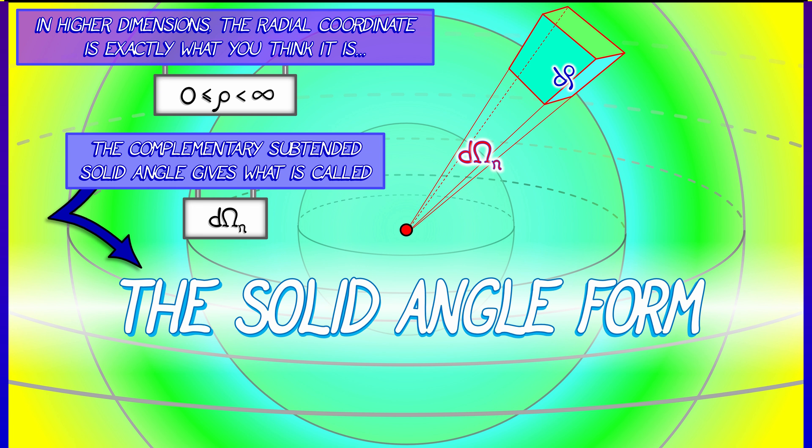So if you try to visualize what is happening, then d omega n is telling you something about surface area on a unit sphere, so that the surface area element at radius rho is going to be rho to the n-1 d omega n.